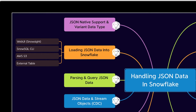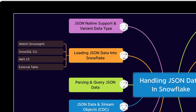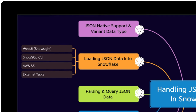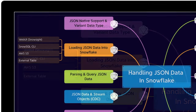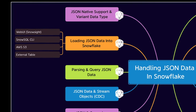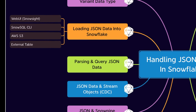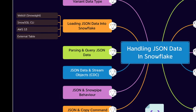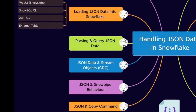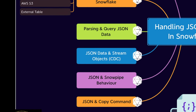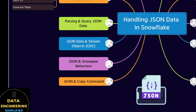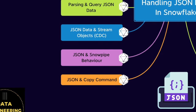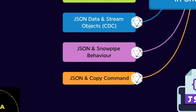The next chapter will focus on loading JSON data files using WebUI — be it legacy or Snowsight — SnowSQL CLI, AWS S3, and using external tables. Then we will move to the next chapter to explore how to parse JSON and query JSON data with simple to complex examples. We will also see how JSON and change data capture works in Snowflake using the stream object, and how to load JSON data using the COPY command and Snowpipe object.